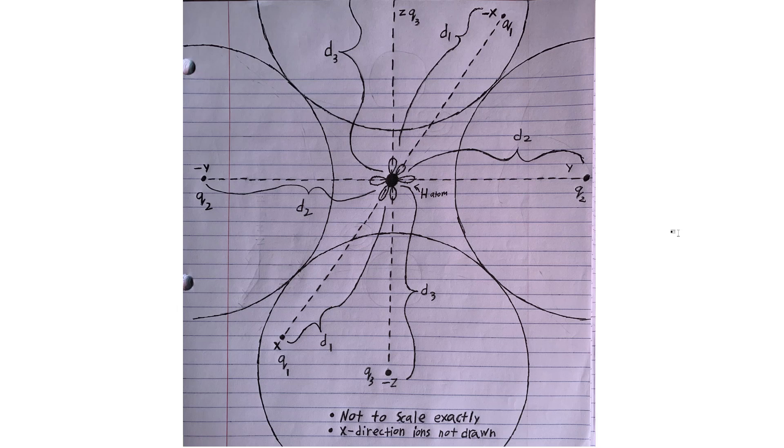So I want you to imagine the system that I've sketched here. The idea is that you have a crystal lattice made out of large ions, and there's one missing, and in that gap, you've got a hydrogen atom.